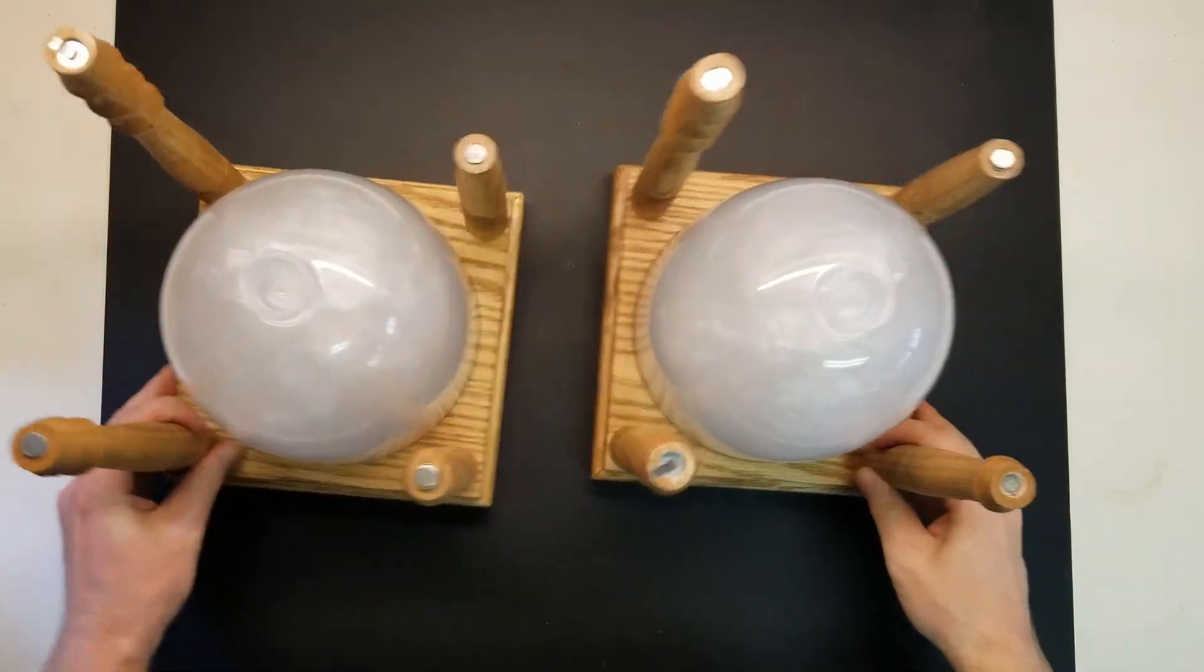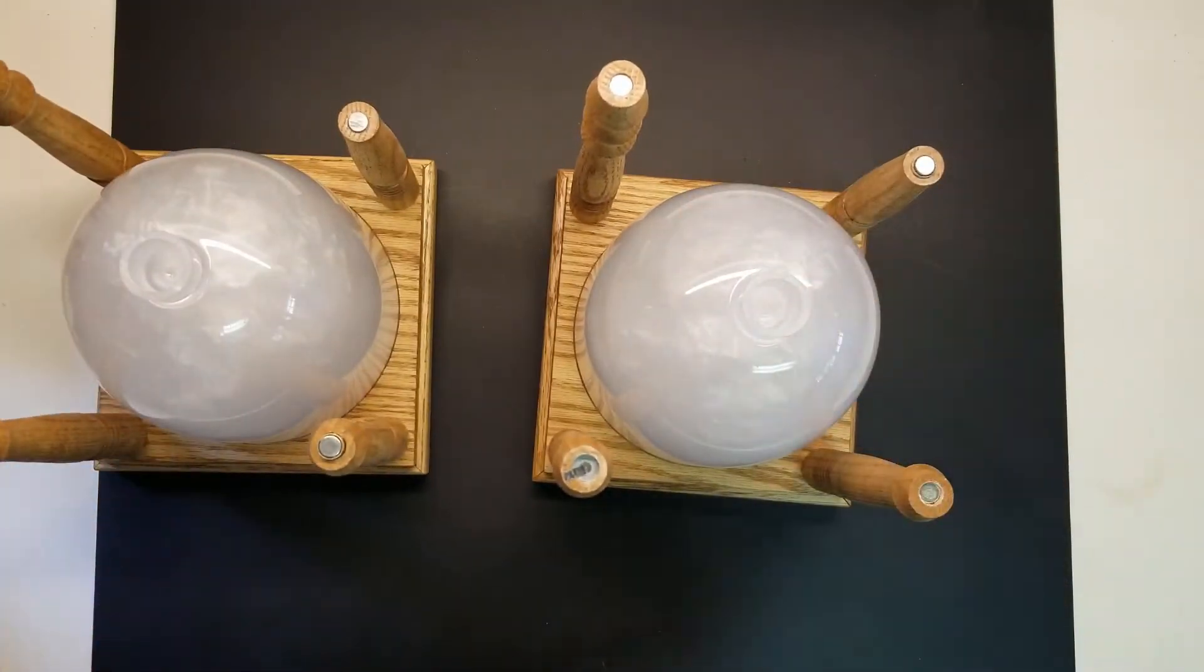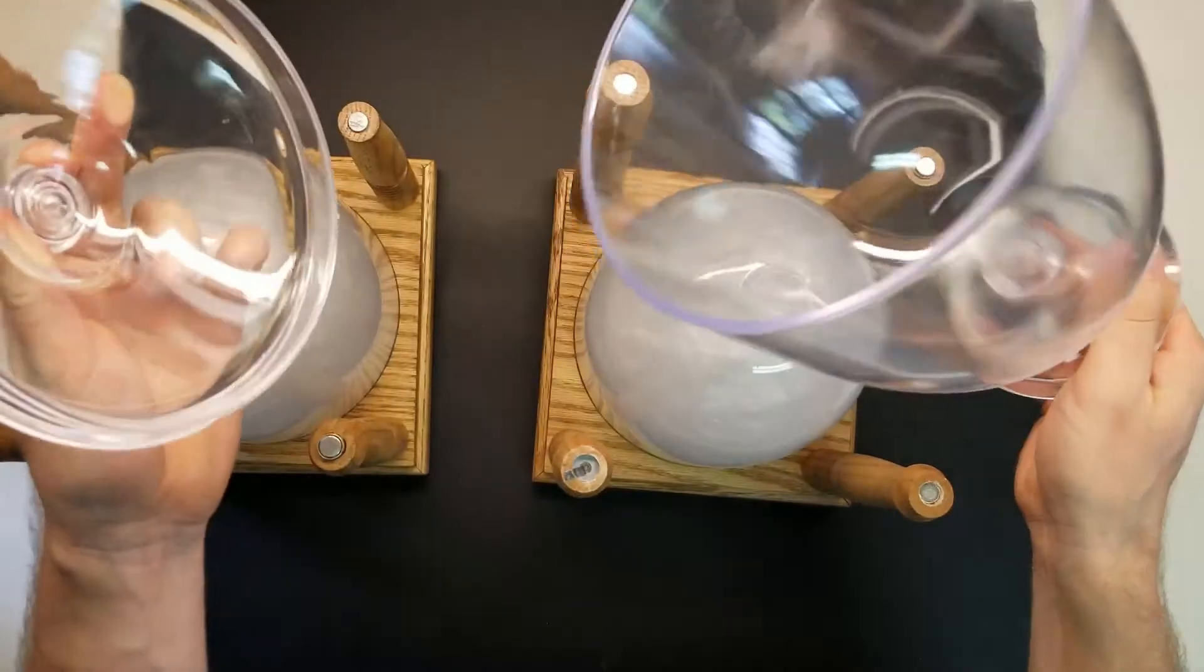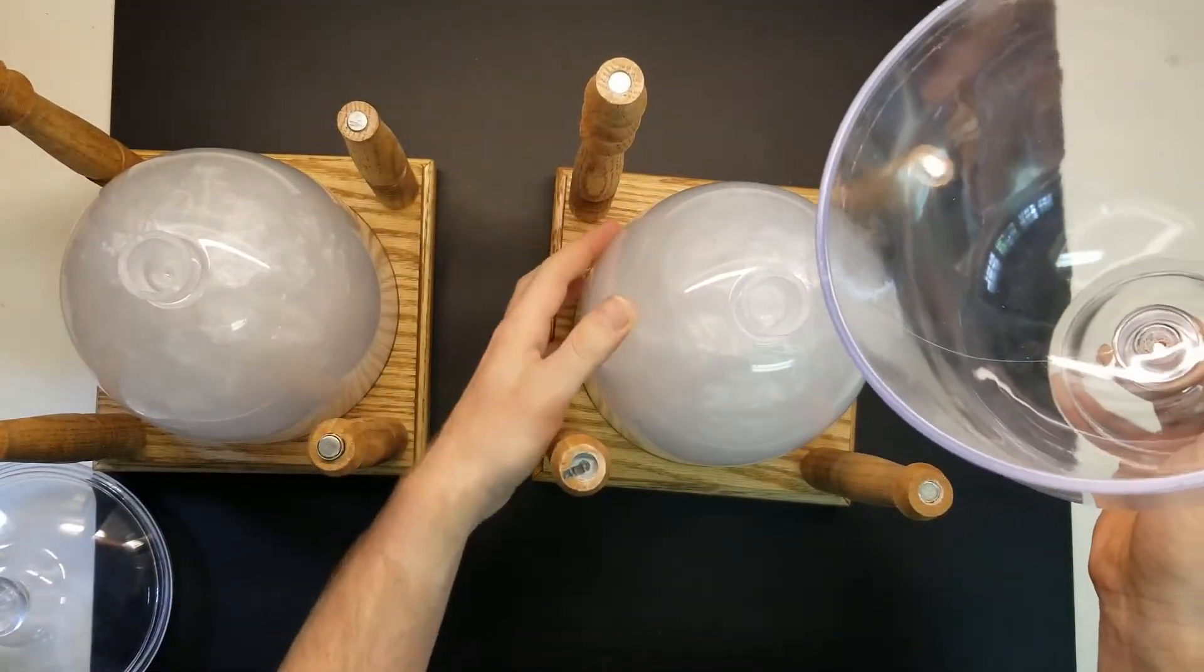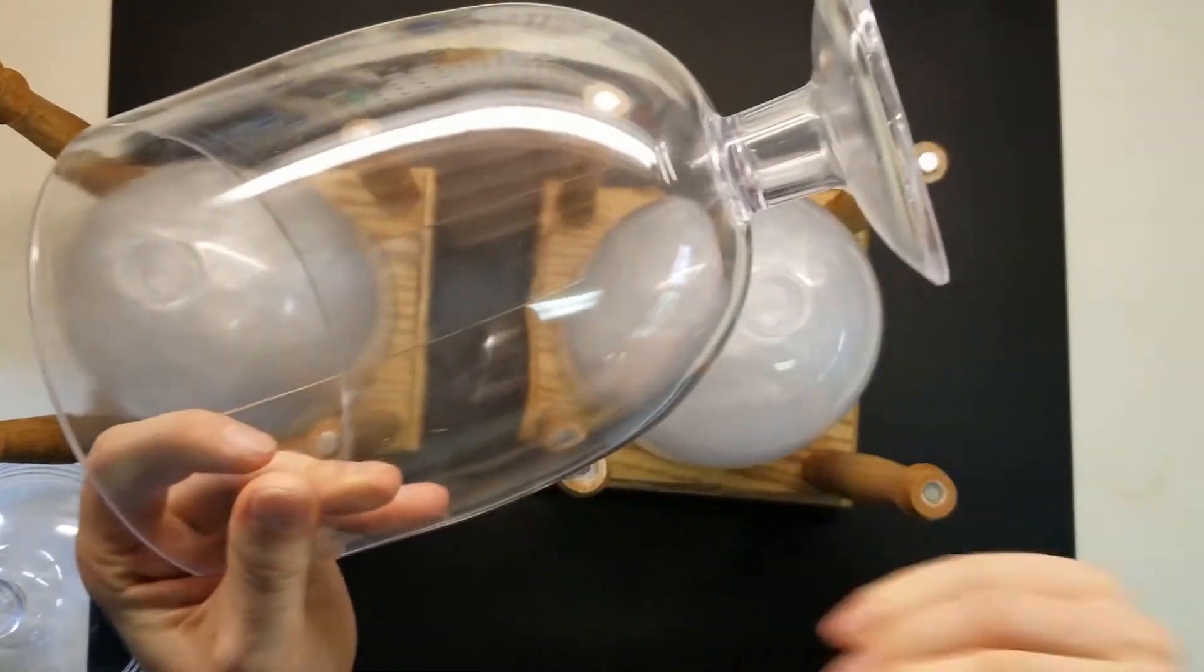And to start with, we'll go ahead and start with the domes here. These domes are clear plastic candy jars I got from Michael's. I sanded the inside with some Scotch-Brite to make it a more diffuse surface to help spread out the lighting and then cut the ends off so that they match.